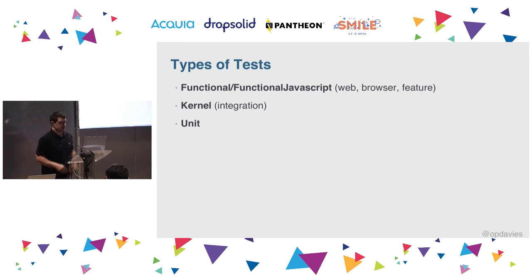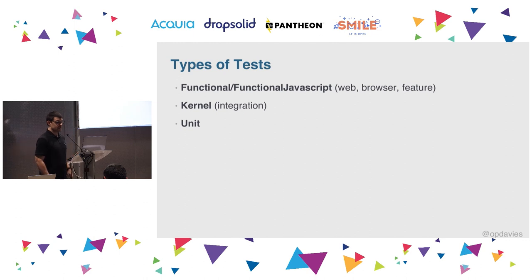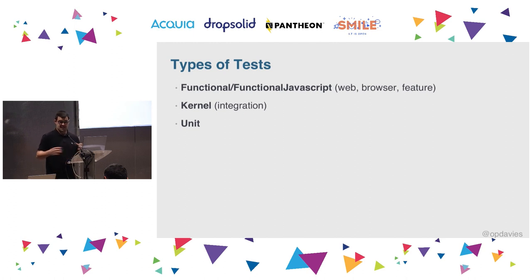There are four different types of tests available in Drupal. Functional tests — also called web tests or browser tests — make requests against endpoints and check responses, testing against an actual database. Kernel tests are integration-level tests where we can test modules, the service container, and make sure services run properly, also using a real database but with a more minimal Drupal bootstrap. And unit tests test pure PHP logic — the typical 2+2=4 type — testing small isolated bits of logic.